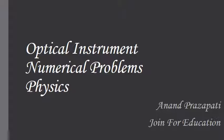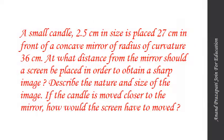Let's see the question. A small candle of 2.5 cm in size is placed 27 cm in front of a concave mirror of radius of curvature 36 cm. At what distance from the mirror should a screen be placed in order to obtain a sharp image? Describe the nature and size of the image. If the candle is moved closer to the mirror, how would the screen have to be moved?